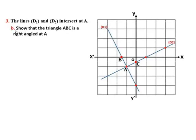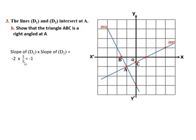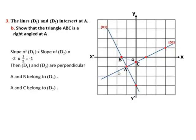Part 3b: show that triangle ABC is a right triangle at A. We calculate the product of the slopes of D1 and D2 to check if they are perpendicular. Slope of D1 equal minus 2. Slope of D2 equal half. Then minus 2 times half equals minus 1, so D1 and D2 are perpendicular. Since A and B are two points on D1, and A and C are two points on D2, therefore triangle ABC is a right triangle at A.